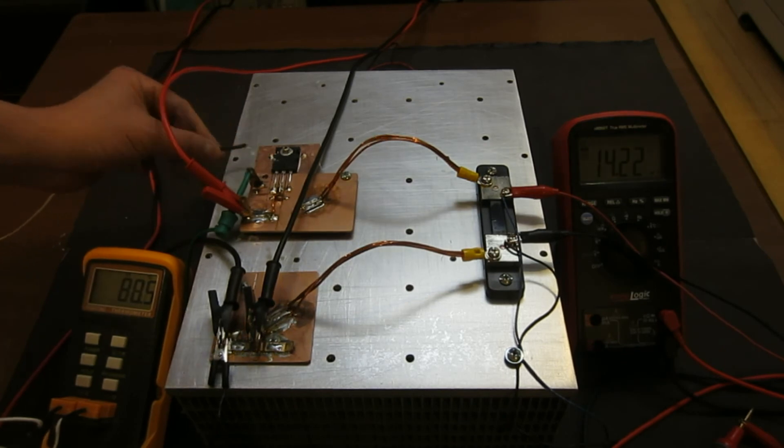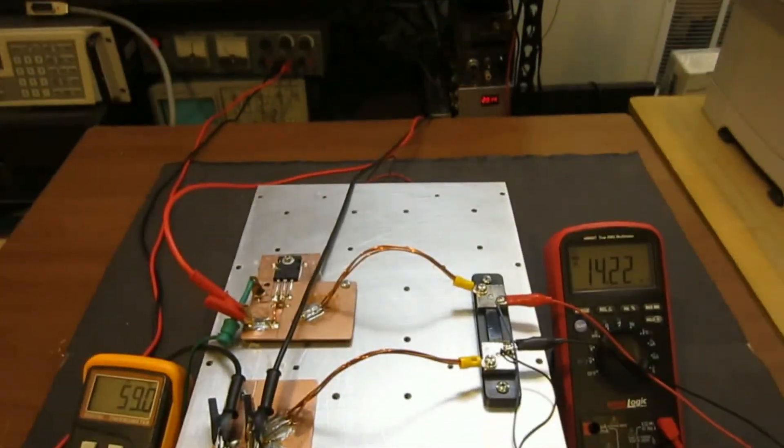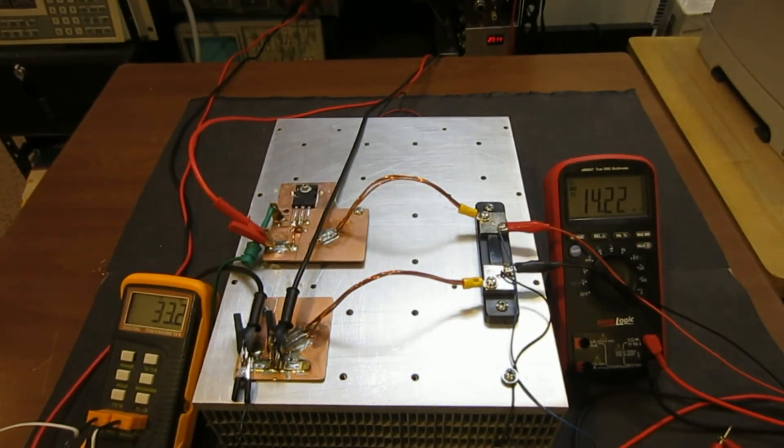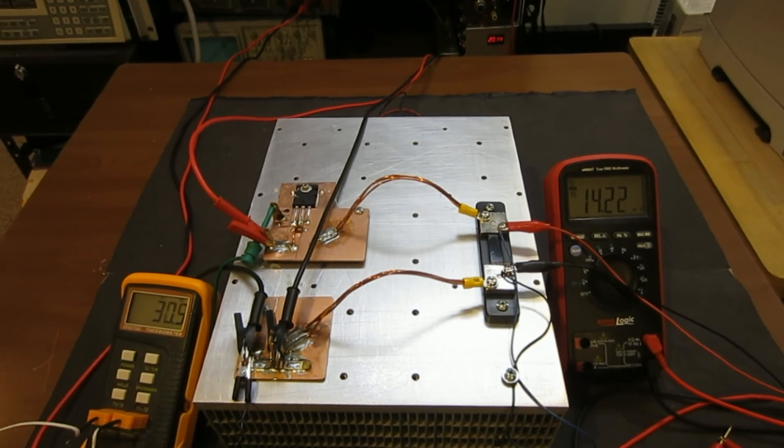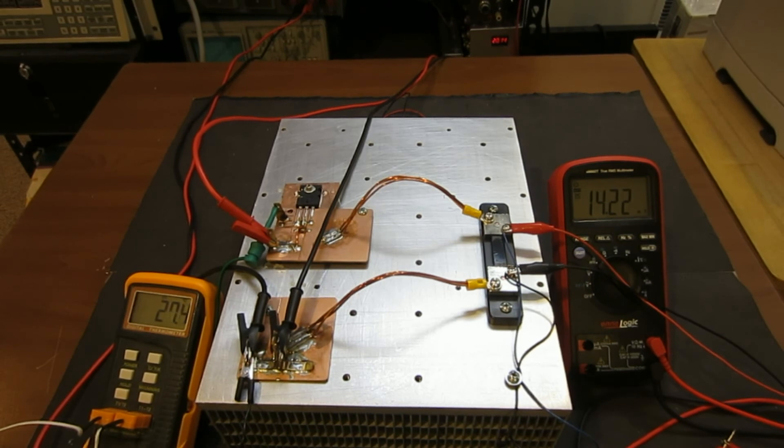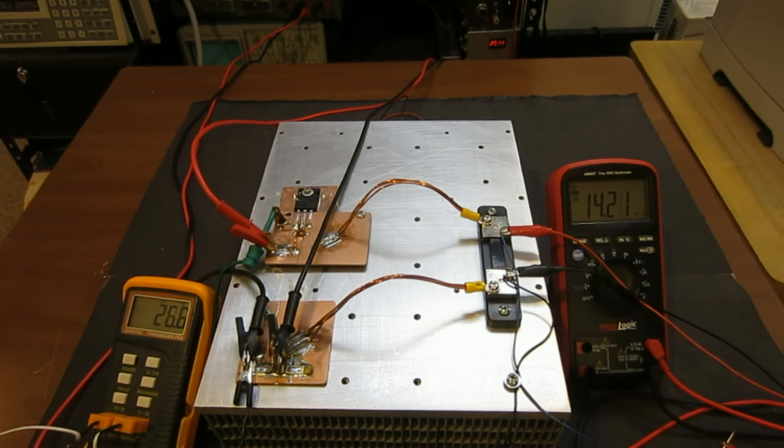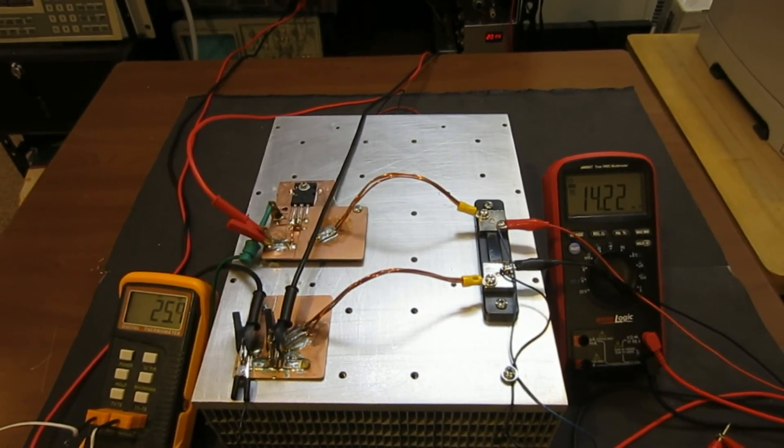So it looks like we can definitely dissipate 200 watts using a single MOSFET. And definitely with an all copper heat sink design, I think you can even push out maybe 10 or 20 watts more. And perhaps with better thermal compound, you can definitely do, let's say, 250 watts with no problem.